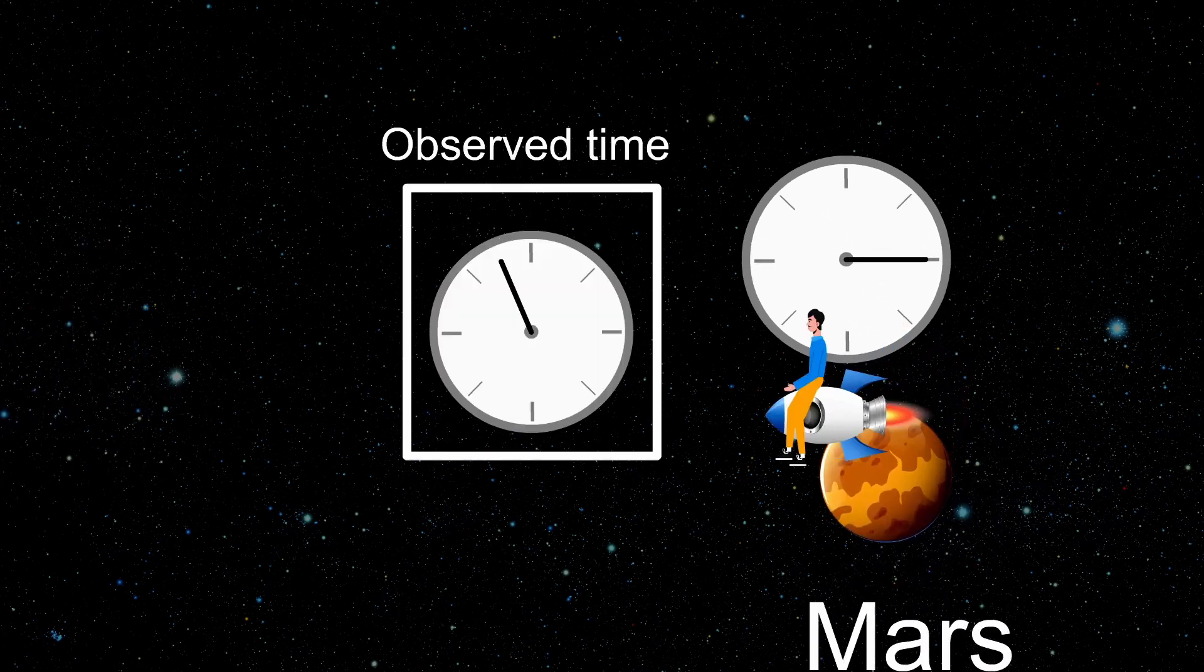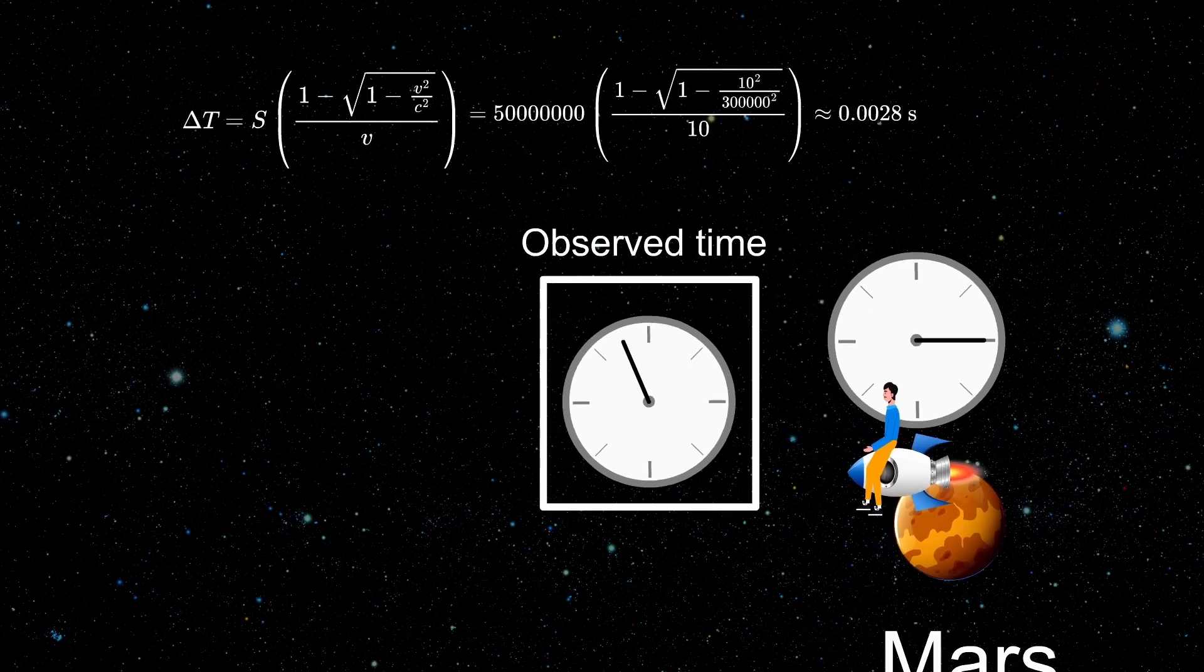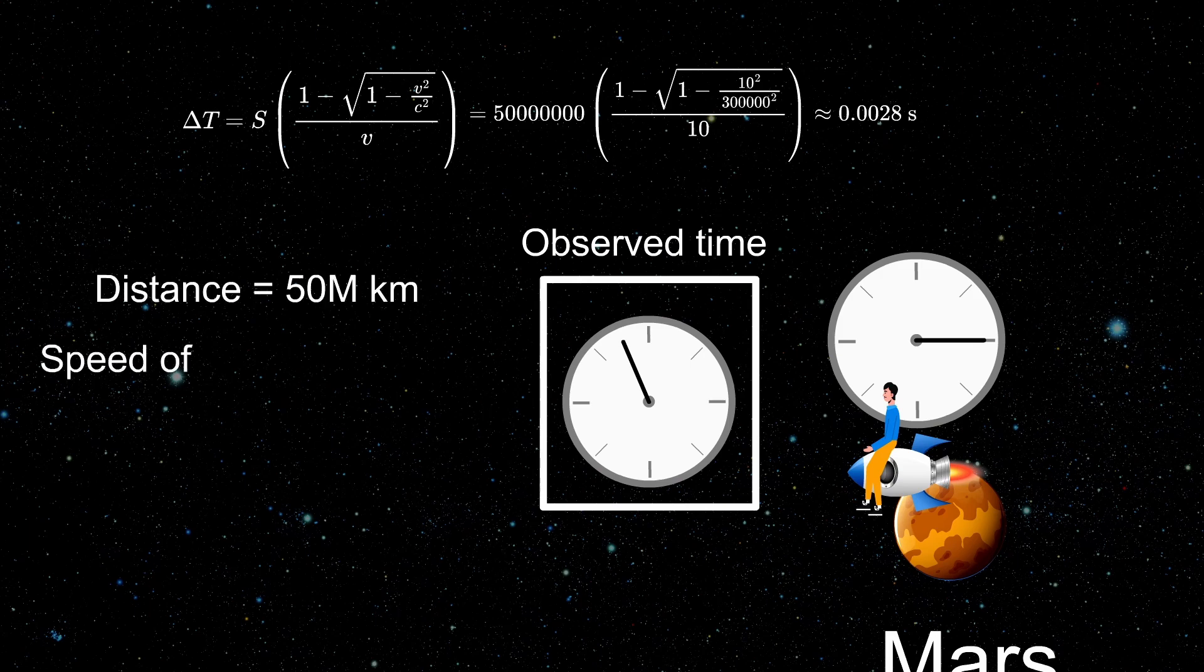If this observer would look at the clock on Earth, he would see smaller time by several minutes. Yet he would claim that clocks are synchronized to a precision of several microseconds. Because, knowing the distance and the speed of light, he can filter out the delay caused by the limited speed of light. This is what we mean when we say that two clocks are synchronized.